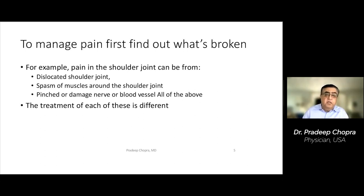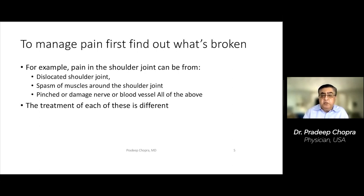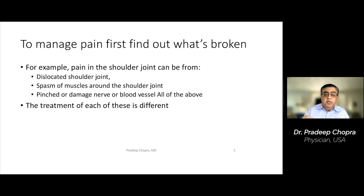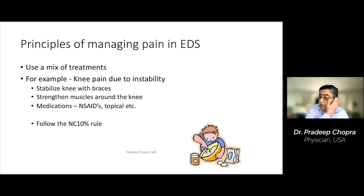For example, if someone has pain in a shoulder joint, it could be a dislocated shoulder joint, subluxations, muscle spasms around the shoulder joint, or even a pinched nerve at the shoulder joint — or any or all of the above. As physicians, our job is to find out what the problem is and fix it. There's no magical band-aid that'll fix all pain conditions. It's about fixing the problem itself. Once you find out what's broken and what the problem is, then comes the issue of how do you treat it.